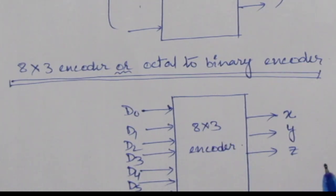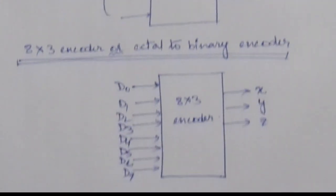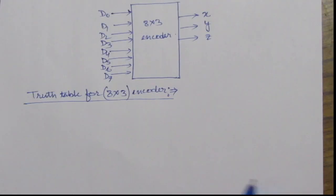So, let us make the truth table of this encoder. Now, we will make the truth table of this encoder. Here we will have 8 inputs, that means d0 to d7 and we will be having 3 outputs.